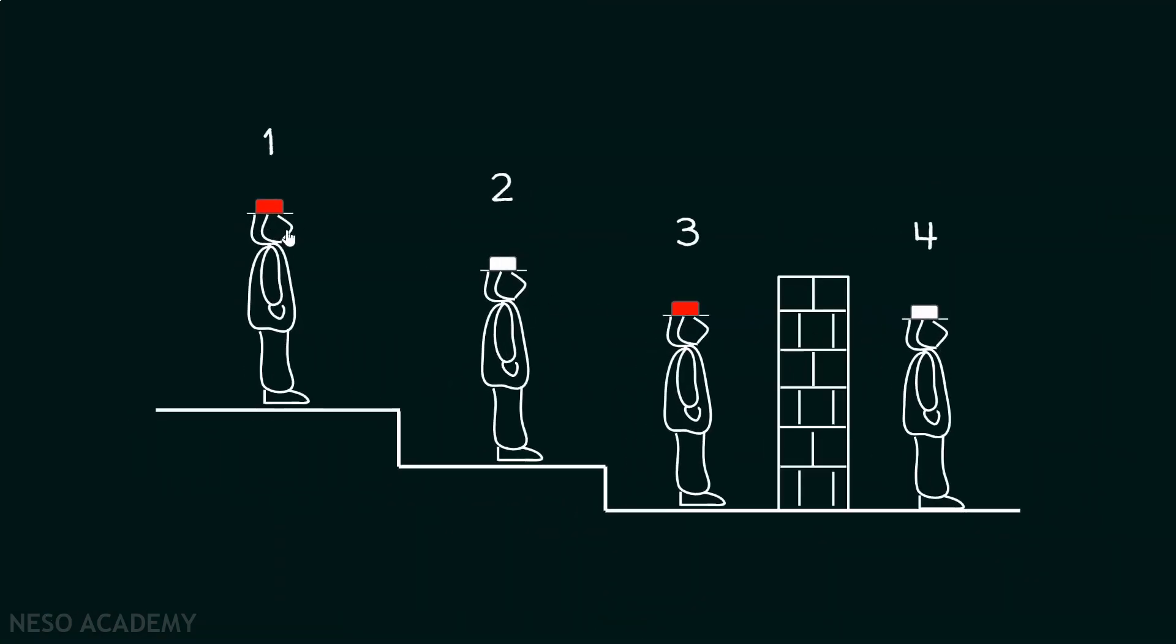The criminals are wearing hats. They are told that there are two white hats and two red hats. The men initially don't know what color hat they are wearing. They are told to shout out the color of the hat that they are wearing as soon as they get to know what color it is.